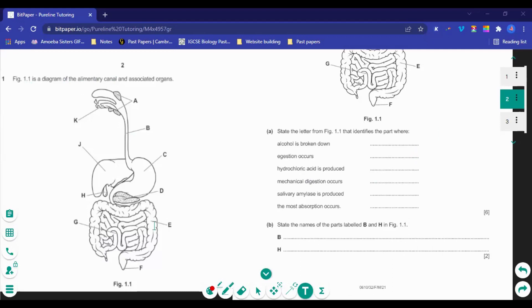So figure 1.1, that's the same thing from here by the way, I just put it side by side. Figure 1.1 is a diagram of the alimentary canal and the associated organs. Part A: State the letter from figure 1.1 that identifies the part where alcohol is broken down. If you can recall, we said alcohol is broken down in the liver. The liver is represented by G.